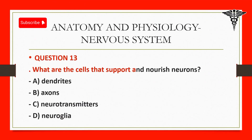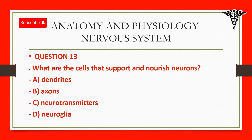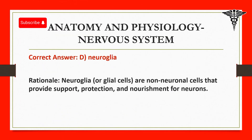Question 13: What are the cells that support and nourish neurons? A. Dendrites. B. Axons. C. Neurotransmitters. D. Neuroglia. Correct answer: D. Neuroglia. Rationale: Neuroglia, or glial cells, are non-neuronal cells that provide support, protection, and nourishment for neurons.